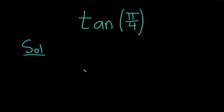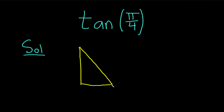We'll start by drawing a very powerful triangle. The triangle looks something like this. This is a right triangle, meaning that this is 90 degrees. This angle here is pi over 4, which is also 45 degrees.